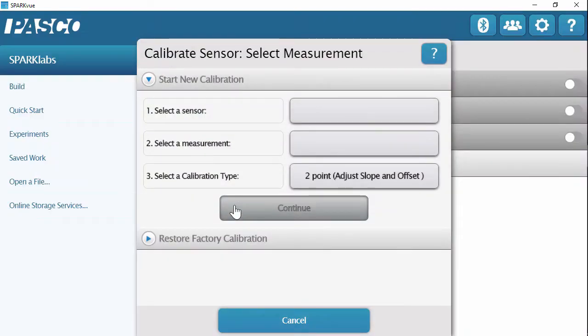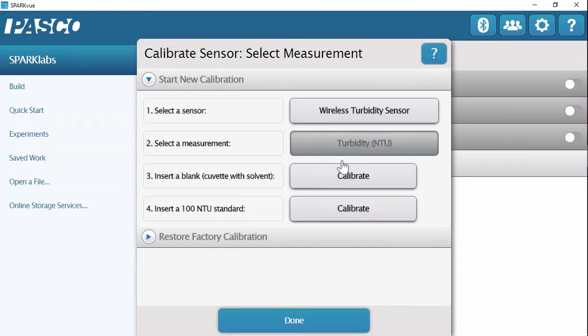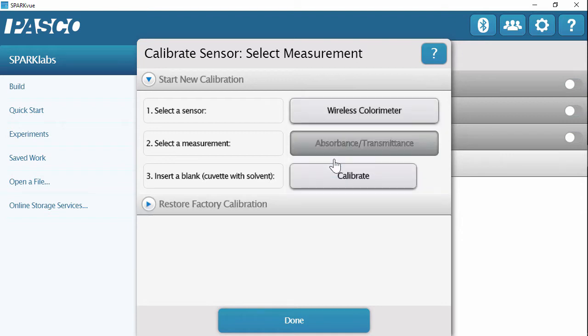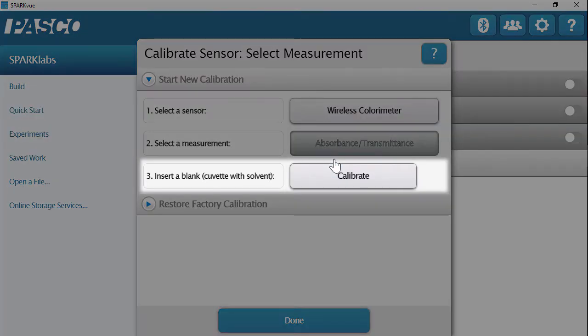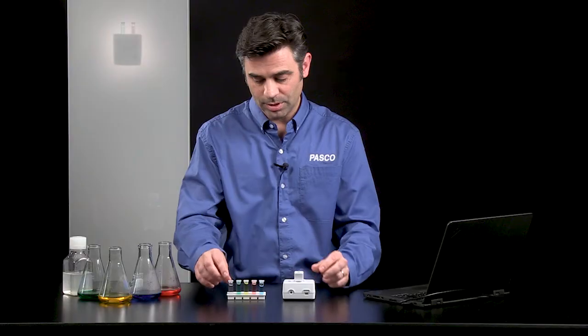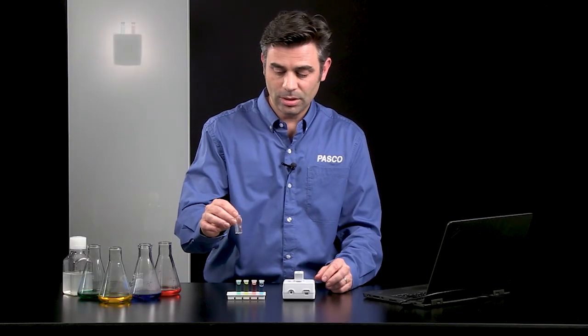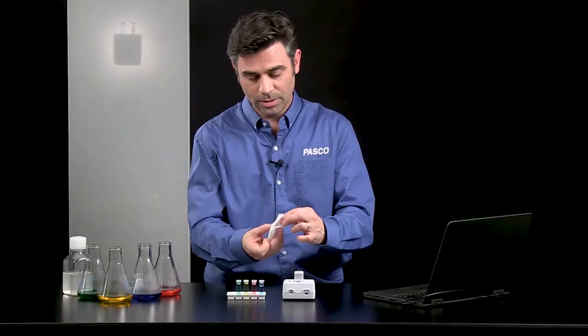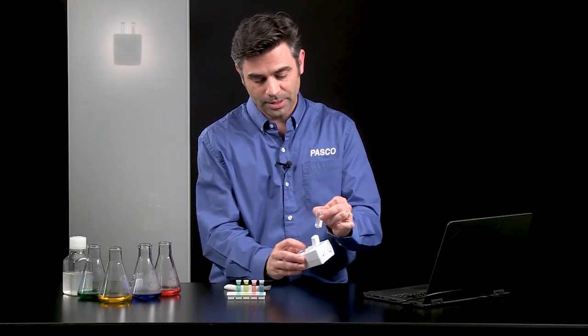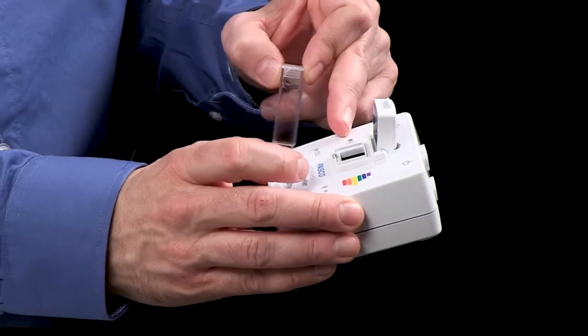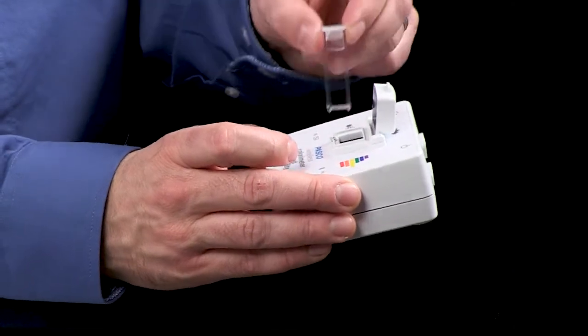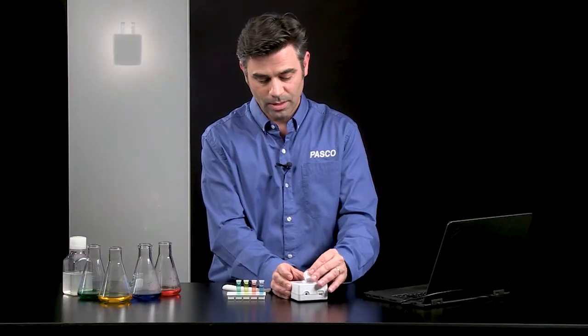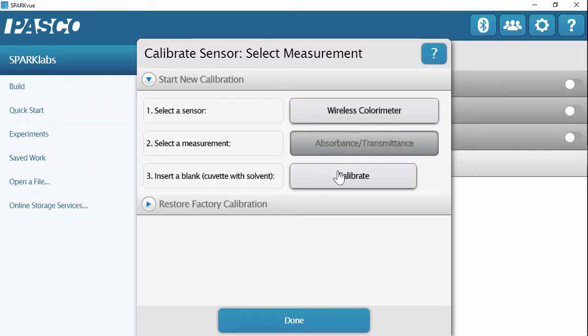So I hit calibrate, and I can calibrate either turbidity or colorimetry. In this case, I want to calibrate my colorimeter. And it instructs me about what to do. So I'm going to insert a blank cuvette, which is a cuvette with a solvent. I'm going to use the cuvettes that have ridges on the sides so that I don't touch the cuvette where the light is going to go through. And I'm going to put that into the colorimeter so the light goes through the clear side over to the detector. And I know that the detector is over here because of the rainbow. I'm going to put that in. I'm going to hit calibrate.